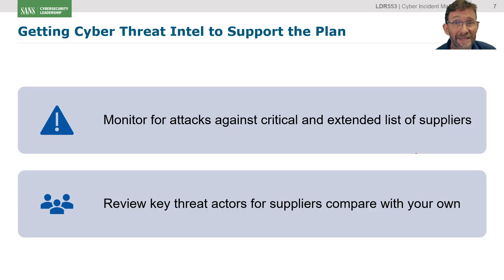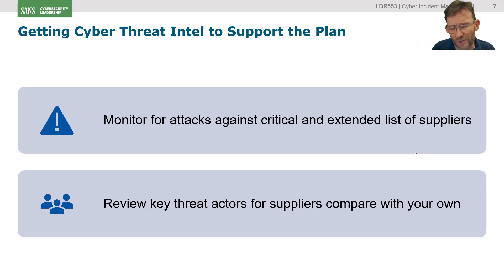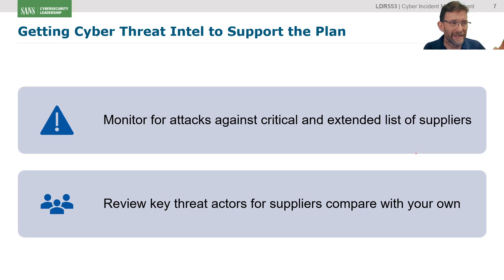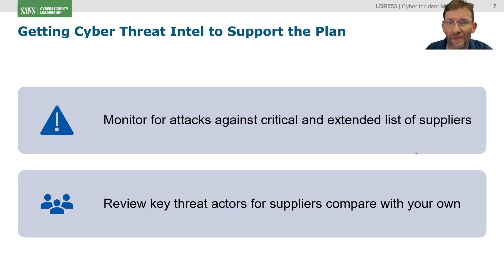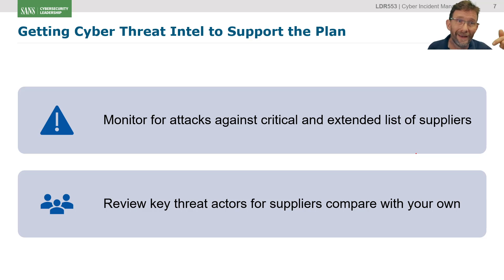Also leverage cyber threat intelligence — monitor your list of critical and extended suppliers. Start on the critical, then extend out adding more suppliers. Review those critical suppliers and ask: who are the threat actors who want into those suppliers who also want into us? For example, a particular threat actor may always hit pharmaceuticals as well as defence companies. So if you have a pharmaceutical supplier supporting you as a defence company, the same attacker hitting both industry verticals could simply use one to get access to the other. It's good to compare your threat map against those of your suppliers to see what the overlap is, because that might indicate an increased likelihood of that attacker hitting them to get access to you.